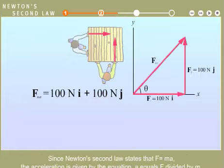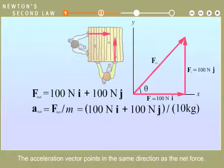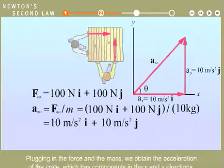Since Newton's second law states that F equals MA, the acceleration is given by the equation A equals F divided by M. The acceleration vector points in the same direction as the net force. Plugging in the force and the mass, we obtain the acceleration of the crate, which has components in the X and Y directions.